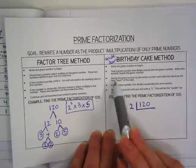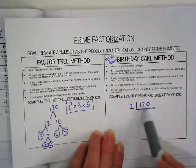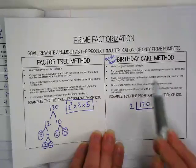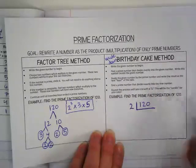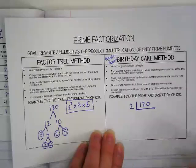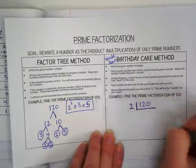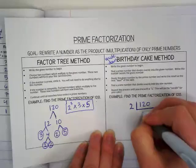I'm going to divide the given number, 120, by the prime number and write the result as the next layer of the cake. So 120 divided by 2 is 60. We write 60 below, and here's our next layer of our birthday cake.